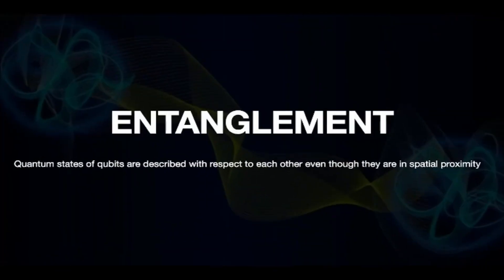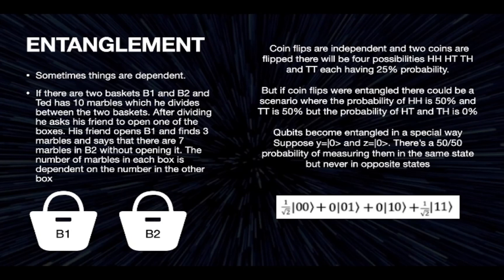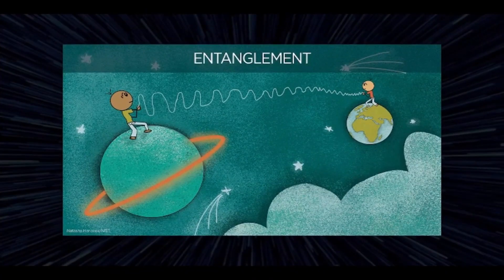The next effect is entanglement. Some things are dependent on each other and some are independent. For instance, if we have two baskets B1 and B2 and Ted has 10 marbles which he divides between the two baskets, and he opens B1 and finds three marbles, he can say there are seven marbles in the second basket without opening it. This is because the number of marbles in each box is dependent on the other. In the case of flipping two coins, there will be four possibilities and each will be independent of the other. But if these two coins are entangled, there would be a scenario where the probability of two heads is 50% and two tails is 50%, but the probability of heads and tails would be zero. Qubits become entangled in a similar way — there's a 50-50 probability of measuring them in the same state, but never in the opposite. Entanglement means that the quantum states of qubits are described with respect to each other, even though they are in spatial proximity.